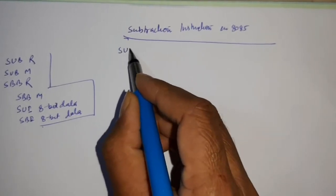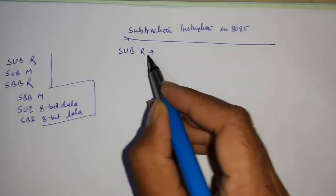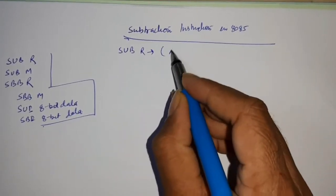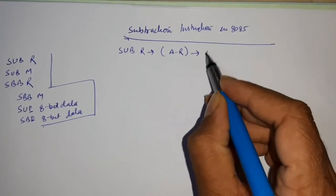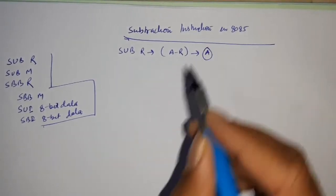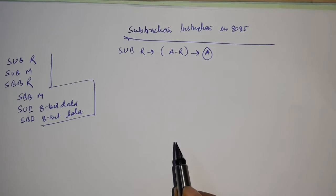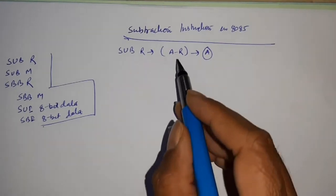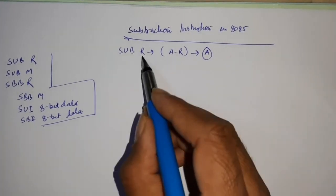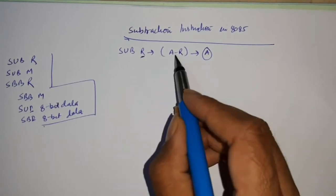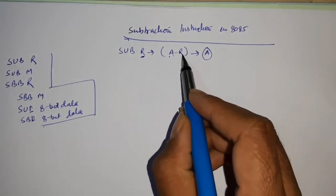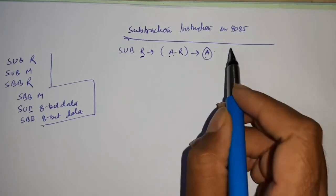Firstly, I am going to discuss SUB r. The meaning of this will be A minus r, and the output will be stored in the accumulator. The content of register r is subtracted from the content of the accumulator and the output will be stored in the accumulator.